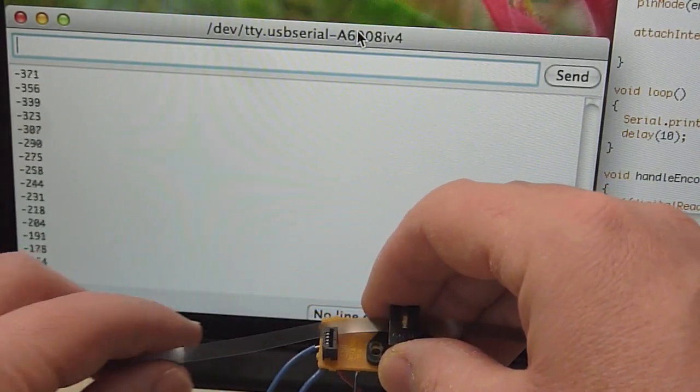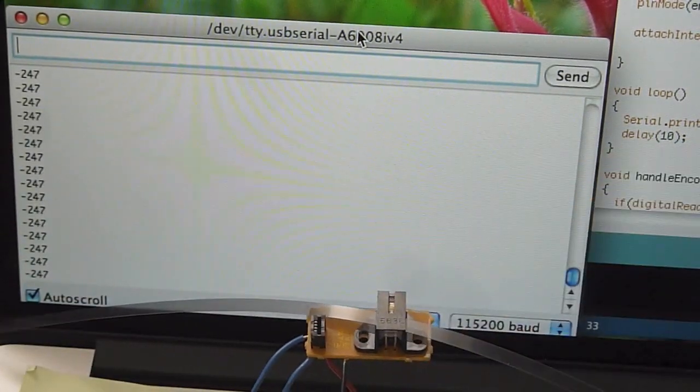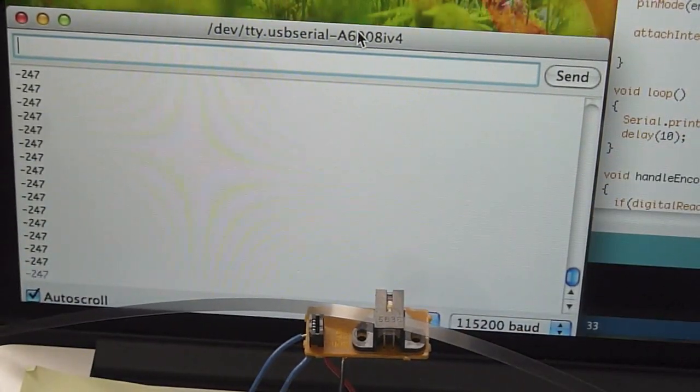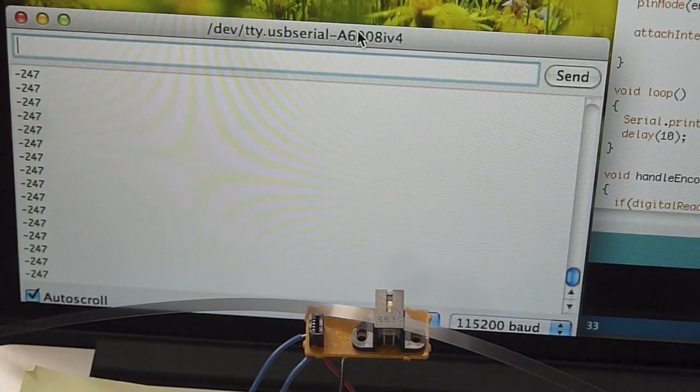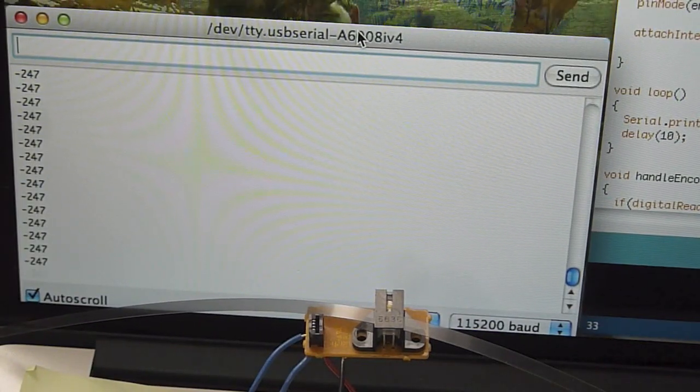So anyway, I hope this was a useful demonstration of how you can steal linear encoders from an old printer and how you can use them with the Arduino to make very precise position measurements. Alright, thanks.